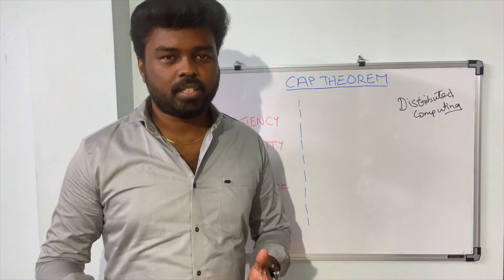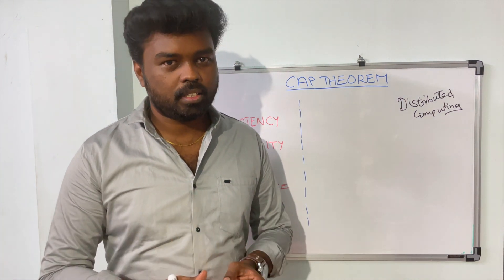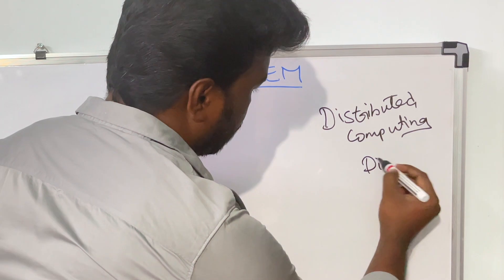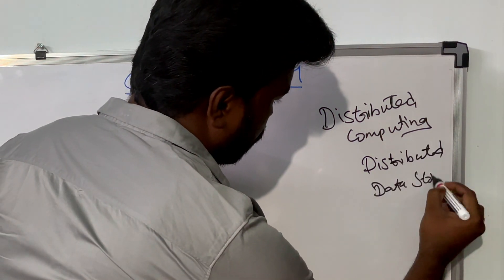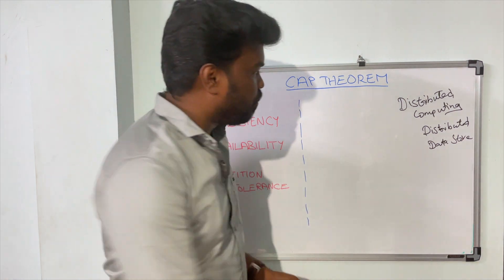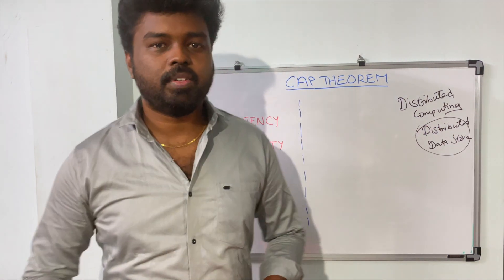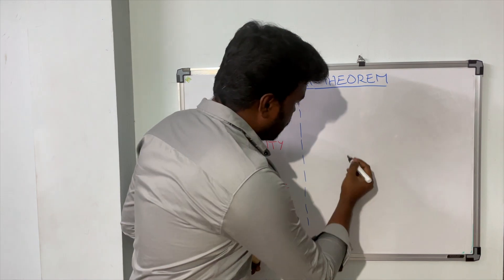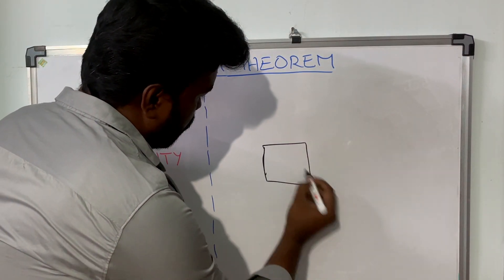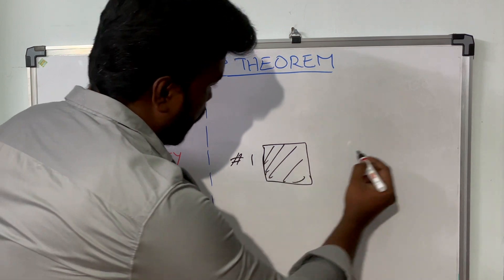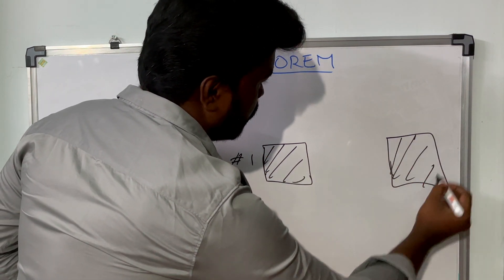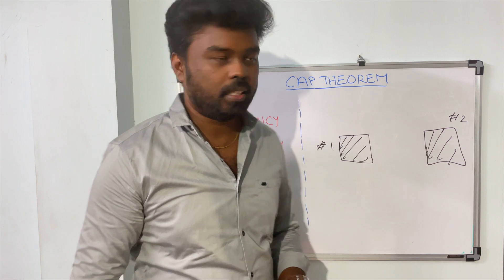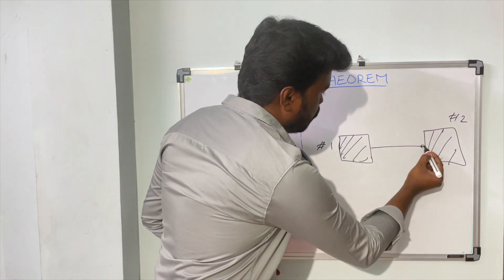Having more than one computer, with these computers working together to store and serve some data to a certain application, is what we call a distributed data store. In this video we are going to focus mostly on the distributed data store. Consider we have two machines connected to each other — machine number one and machine number two. These two machines are going to work together to store and serve some data to a certain application, and they are connected to each other through a network.